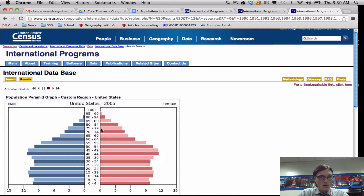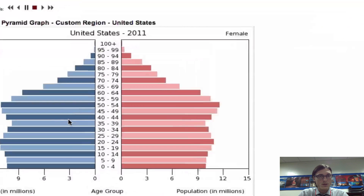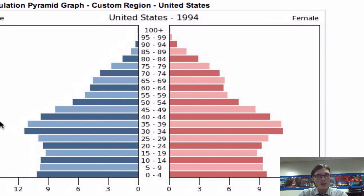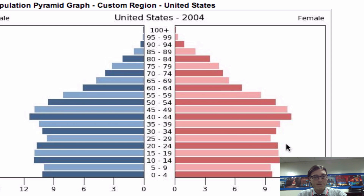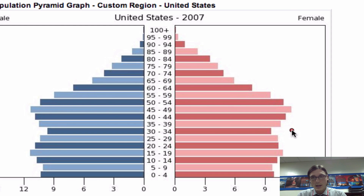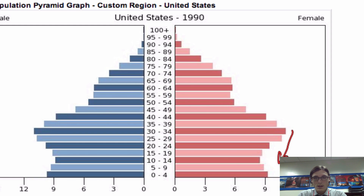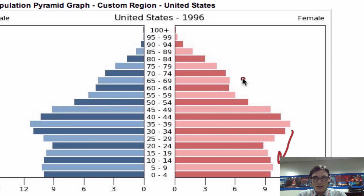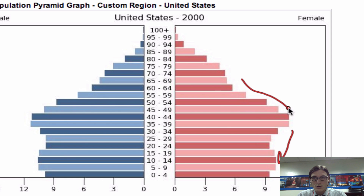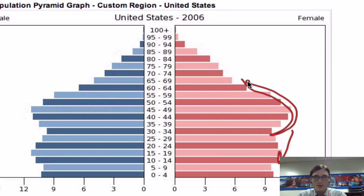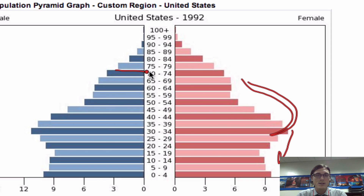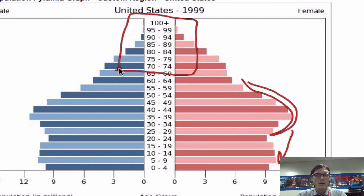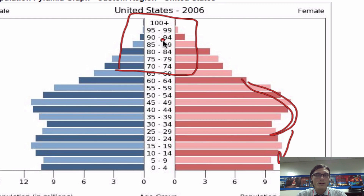Then one of your more developed countries, which is the United States. You'll notice that the birth rate has, in fact, fallen and is continuing to fall down at the base. The death rate is very much under control — you have convex sides rather than concave sides — and the life expectancy is also quite high because this is one of your more developed countries, and so people are living into those older ages.